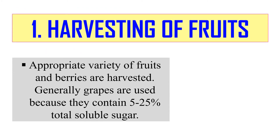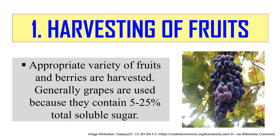The first step is harvesting of fruits. The production process of wine starts from the harvesting of the fruits. Generally grapes are used for wine production because they contain 5 to 25% total soluble sugar, meaning a high level of fermentable sugar. That's why they are a great substrate for wine production.